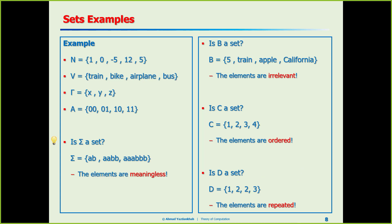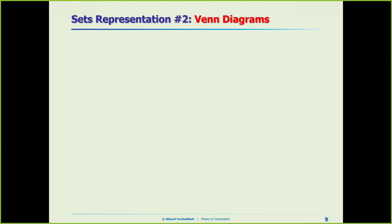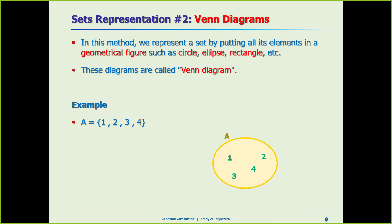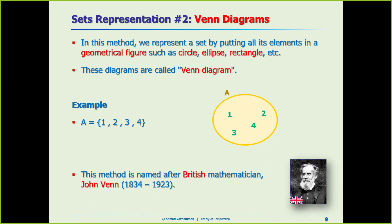The second representation of a set is the Venn diagram. We put all of the elements inside a geometrical figure like a circle, ellipse, rectangle, or whatever. John Venn was a British mathematician and this technique was invented by him. Sometimes when we want to visualize a set, we use a Venn diagram.